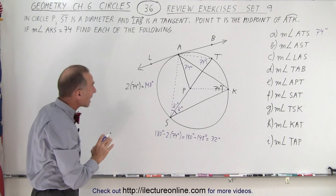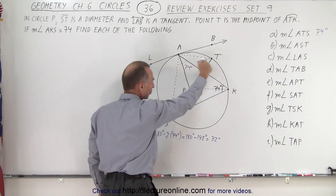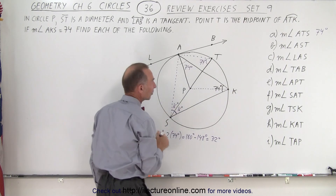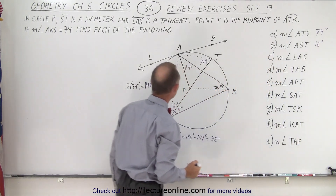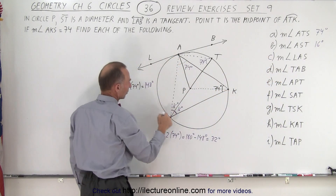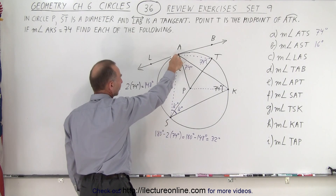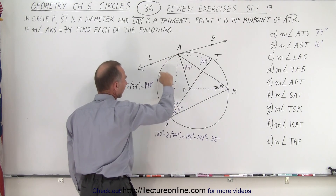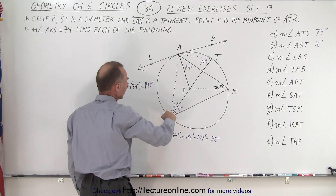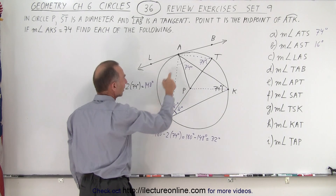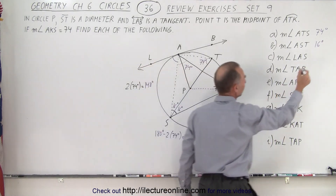Angle AST, from A to S to T: by the symmetry of this whole setup, we already determined this must be 16 degrees. For angle LAS, from L to A to S: notice it subtends the same arc length of 148 degrees, so this angle must be half of 148, which is also 74 degrees.